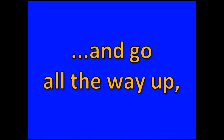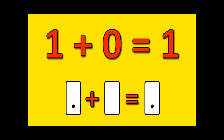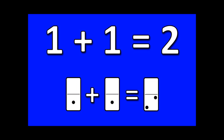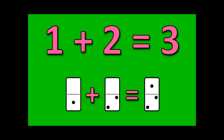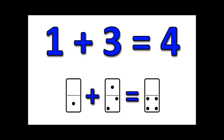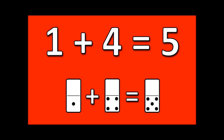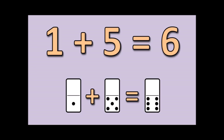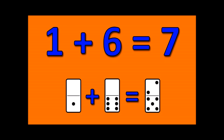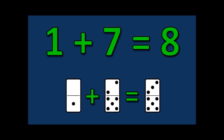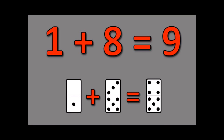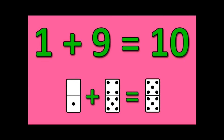Alright, let's do it again. Go all the way up, then all the way back down. Ready? Here we go. One plus zero is one. One plus one is two. One plus two is three. One plus three is four. One plus four is five. One plus five is six. One plus six is seven. One plus seven is eight. One plus eight is nine. One plus nine is ten.